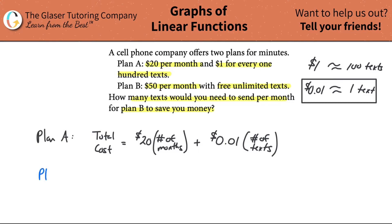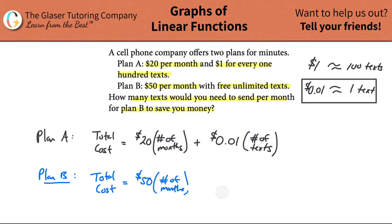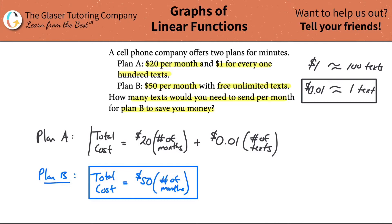Now for Plan B, the total cost will equal fifty dollars multiplied by the number of months. Then plus — well, it says free unlimited texts, so no matter how many you send it costs you zero dollars per text. So it's zero dollars times the number of texts, and zero times anything is zero. We can just leave that whole part out.